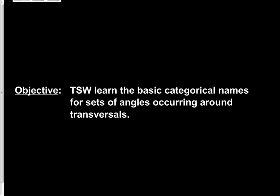Our objective for Friday will be: the student will learn the basic categorical names for sets of angles occurring around transversals. The date for tomorrow's class will be Friday, October the 11th, so copy your objective and your date. As always, press pause anytime you need more time to copy something down, and then press play when you're ready to move on.